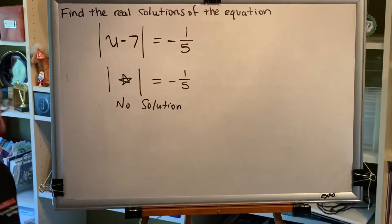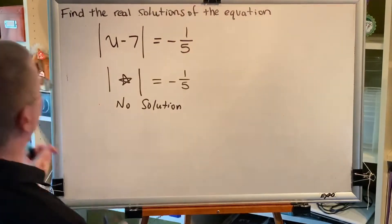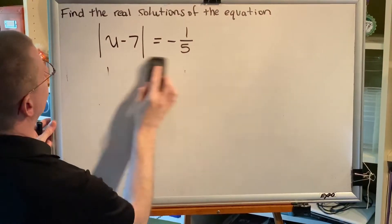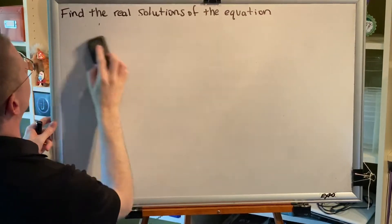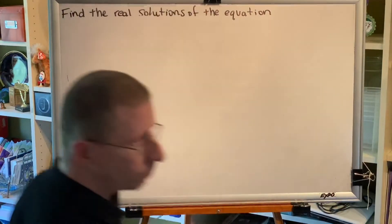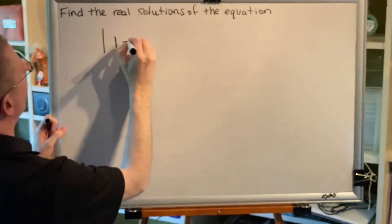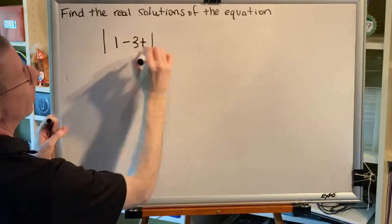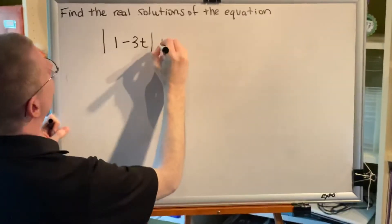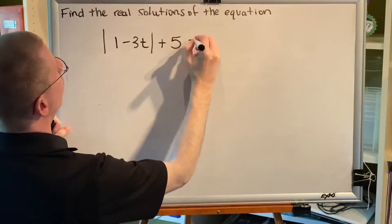Alright, that was a short one. Let's do another. The absolute value of 1 minus 3t plus 5 equals 18.